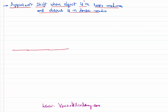Let us consider this boundary that is separating the two media. This medium is a rarer medium and this medium is a denser medium. Let the rarer medium be vacuum so that the refractive index is 1, and the denser medium has a refractive index n. We have an object here at a height h from the boundary separating the two media.